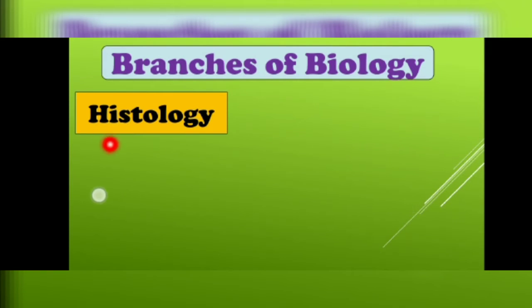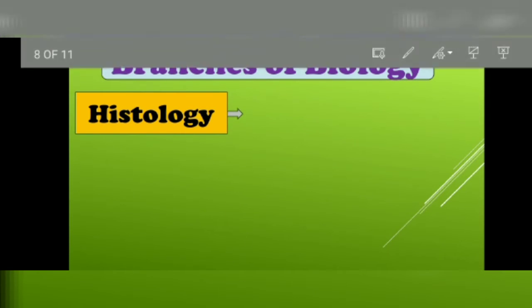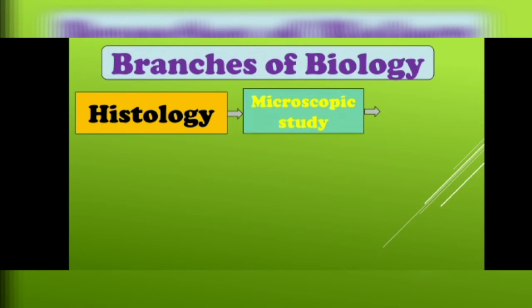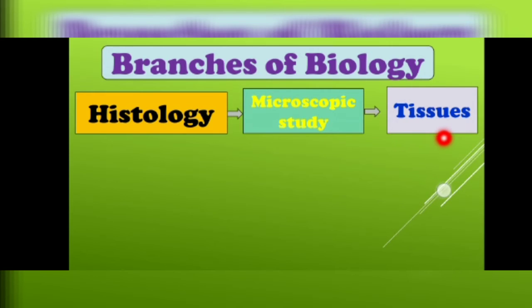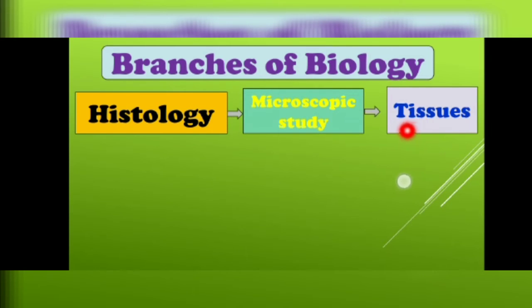Now come towards another branch of biology, that is histology. We can define histology as the microscopic study of tissues. When we study about tissues in detail, it will be included in histology. Tissues are groups of similar cells specialized for the performance of a common function. When you study tissues in detail with the help of a microscope, it will be included in histology.